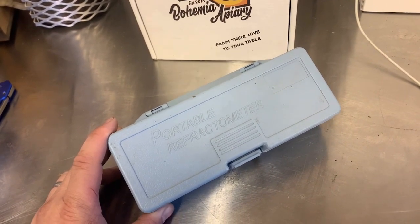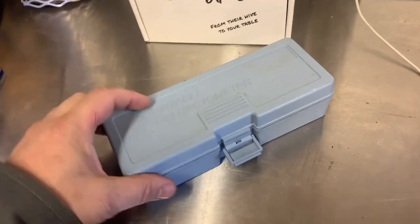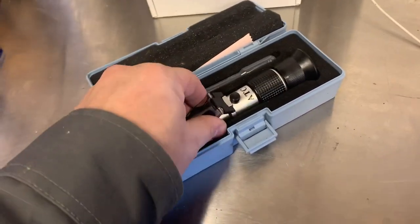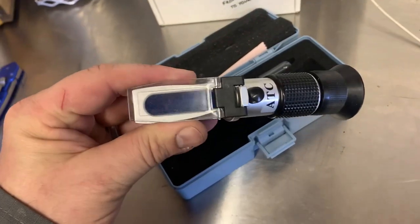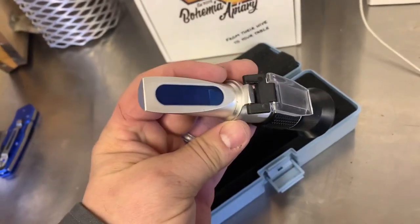It measures how much moisture content is in that particular bit of honey that you have. It looks almost like a little magnifying glass with a flat end and a cap that goes over top.